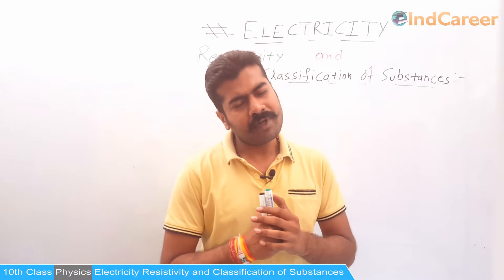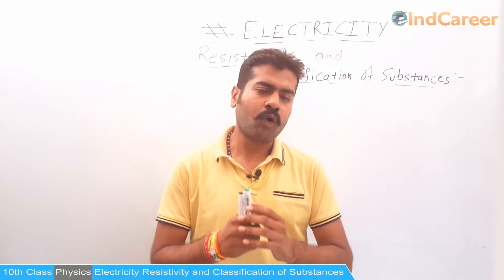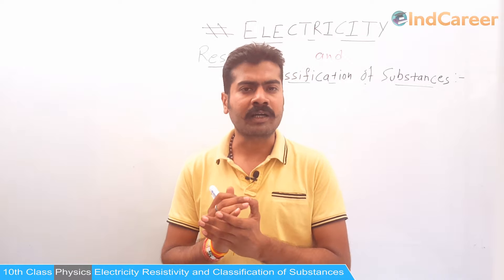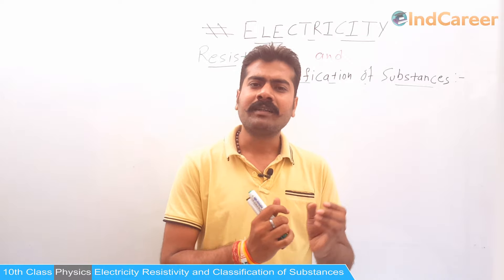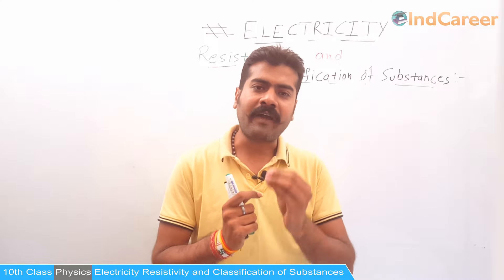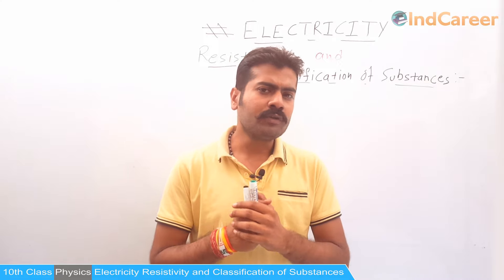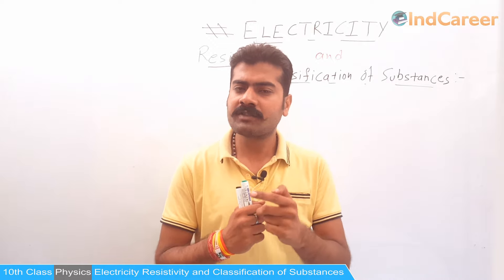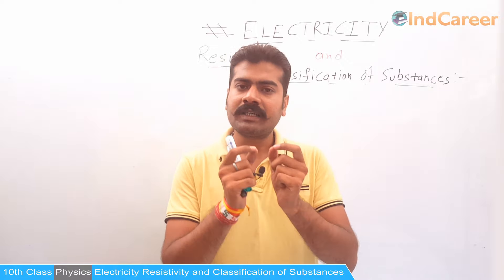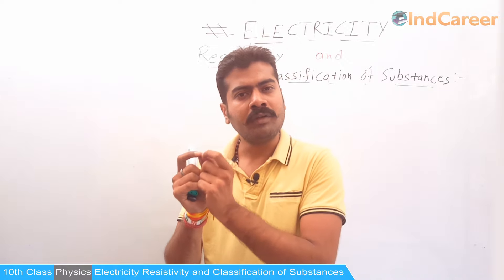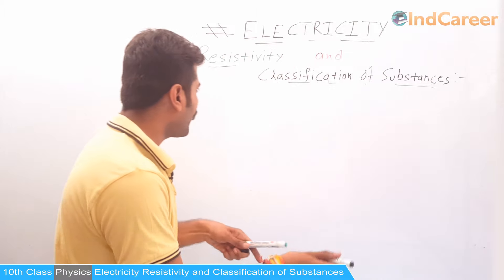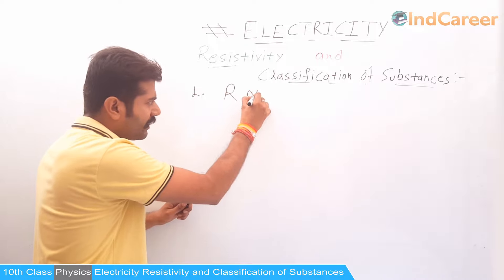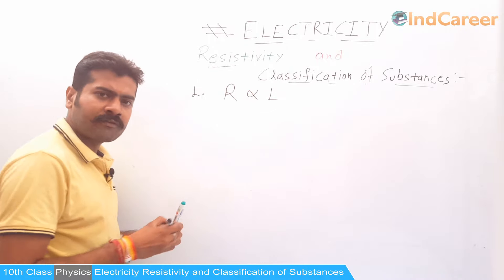In the previous video, we saw what are the factors which affect the value of the resistance of any conductor. Out of those four factors, two are very important. The first one is that resistance is directly proportional to the length of the conductor.